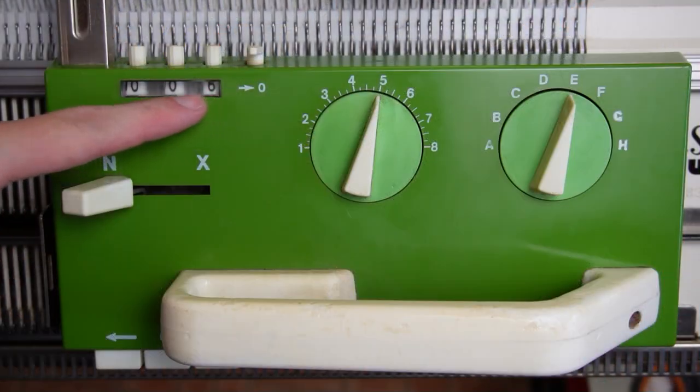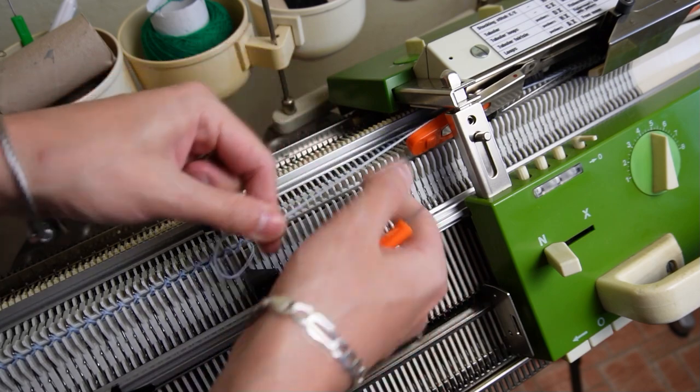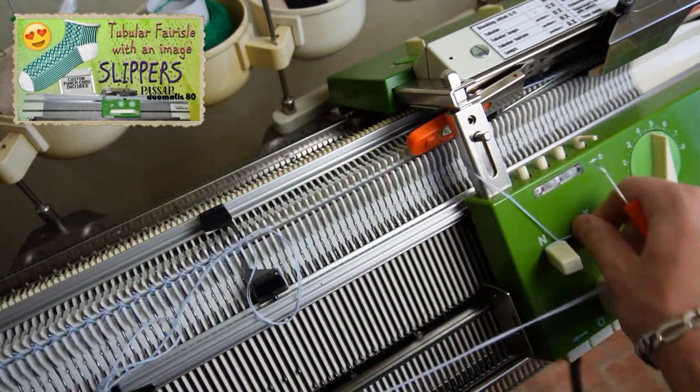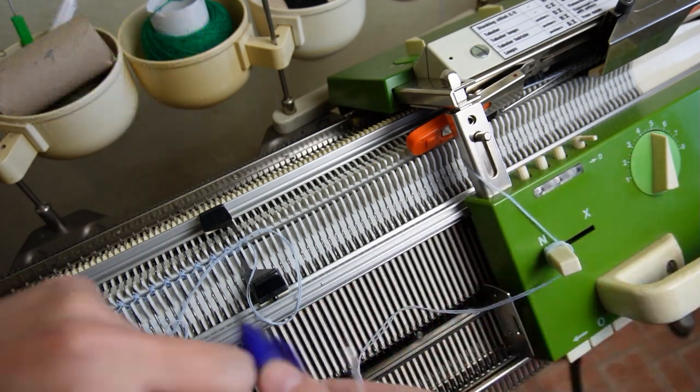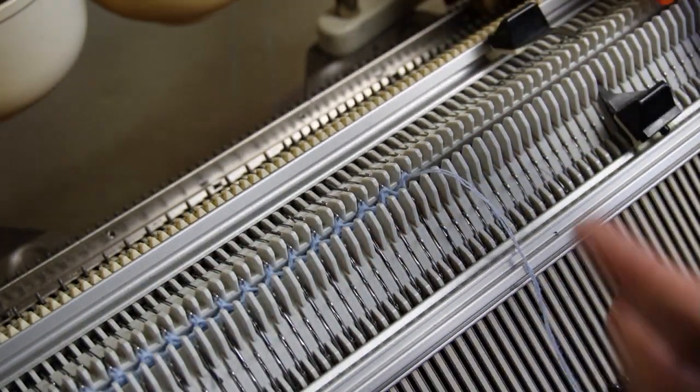Can you imagine that the first sock is ready? Pull the yarn from the lock and cut it. Thread it in the double eye bodkin too and sew off all stitches.